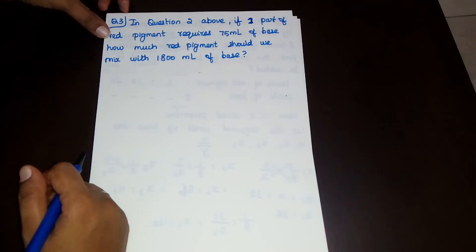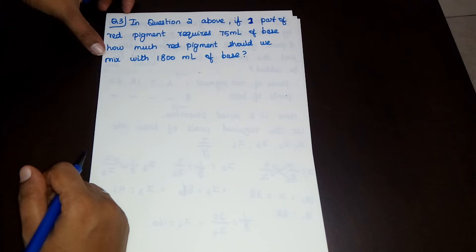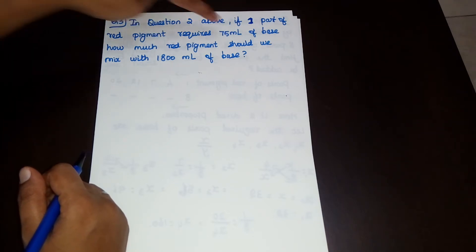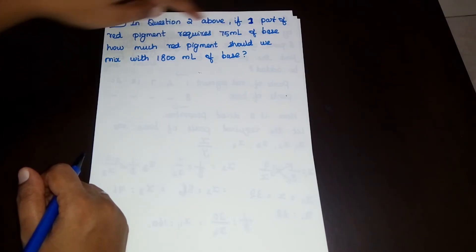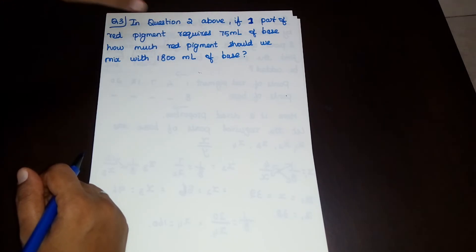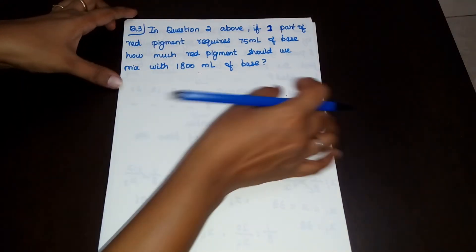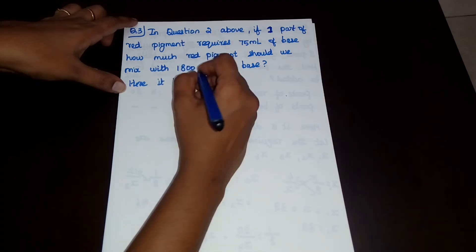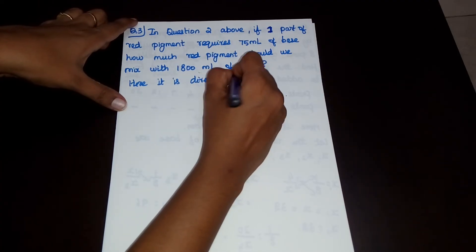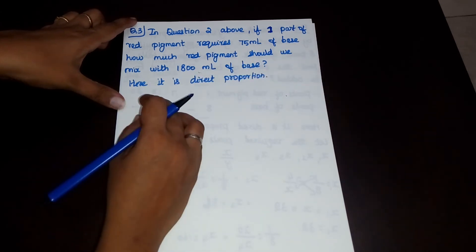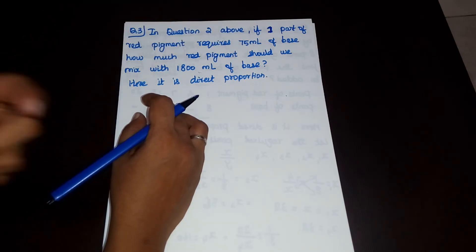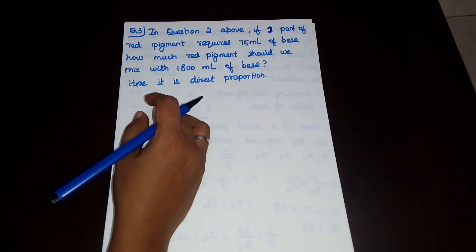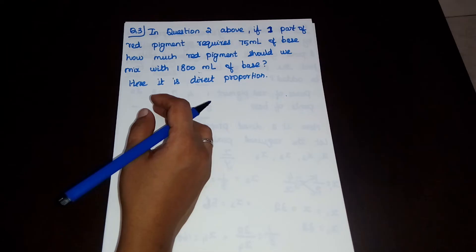Question number 3. In question 2 above, if one part of red pigment requires 75 ml of base, how much red pigment should be mixed with 1800 ml of base? So, one part of red pigment is 75 ml of base. This is a direct proportion.